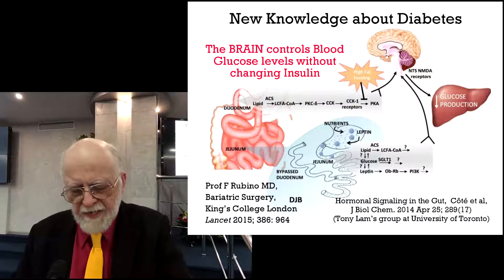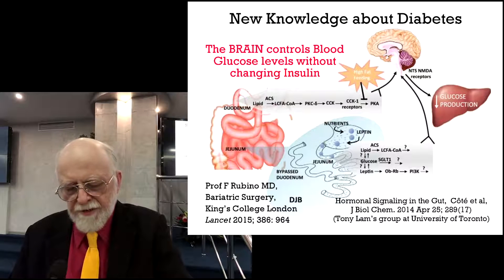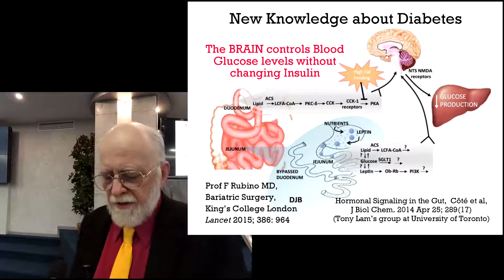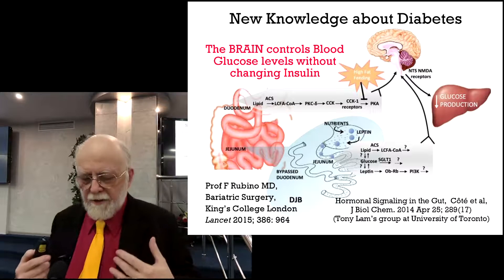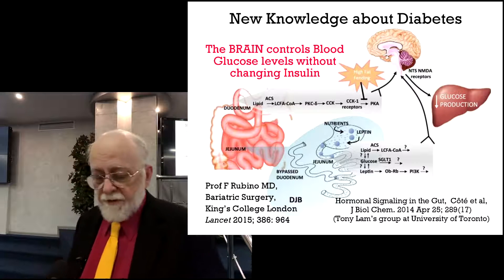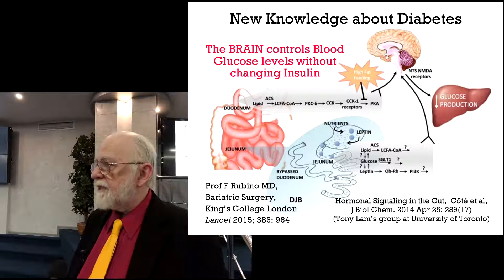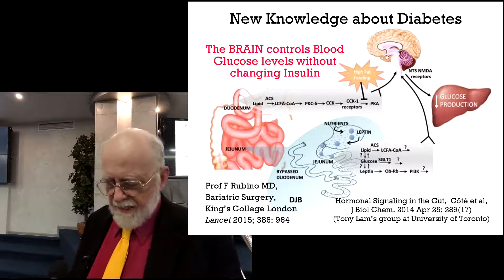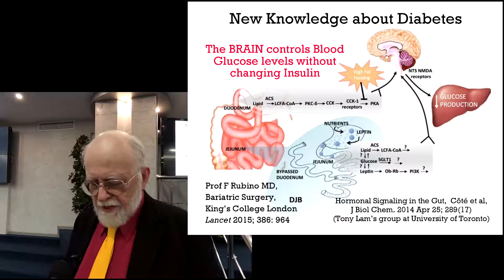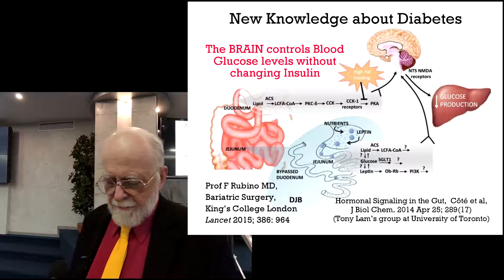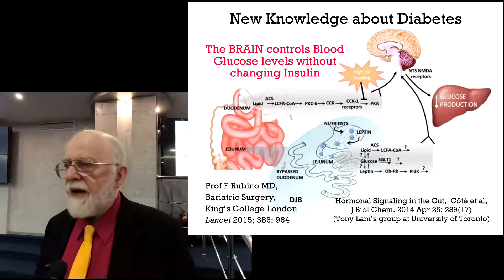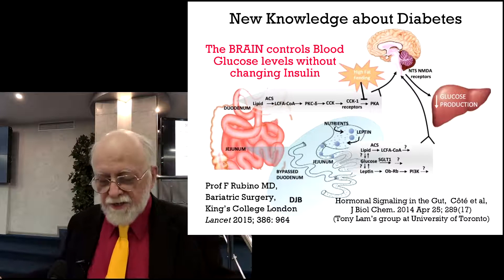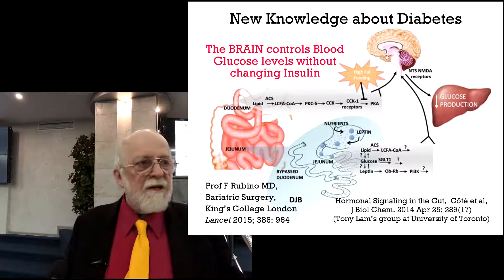There is new knowledge. For about a decade, Tony Lamb's group at Toronto has been working on how a healthy body controls blood glucose, and they found that the brain controls blood glucose via the vagus nerve without changing insulin levels in the body. The brain uses other hormones — ghrelin, CCK, and various signaling agents — as described in a paper by Cote et al. on hormonal signaling in the gut. It's a wonderful paper that totally sets the knowledge we think we have about diabetes on its head.